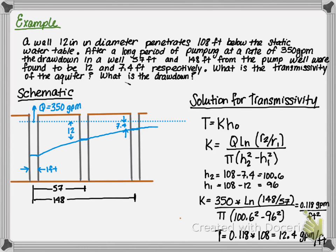Next, the solution for transmissivity. We know T equals K times H0. We need to determine K. We rearrange the flow rate equation, solve for H2 and H1, and we determine K to be 0.118 gallons per minute per feet squared. And we find the transmissivity to be 12.4 gallons per minute per foot.